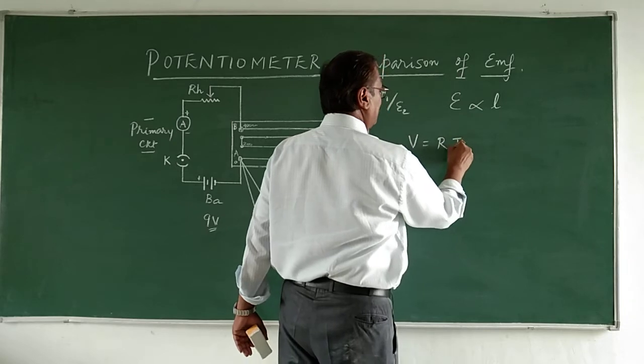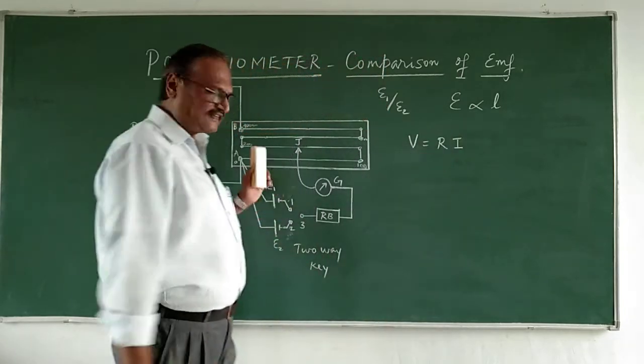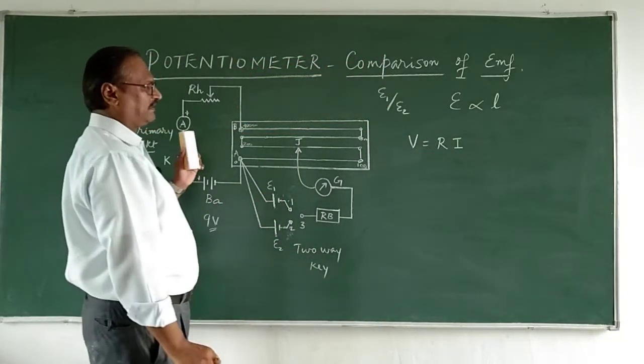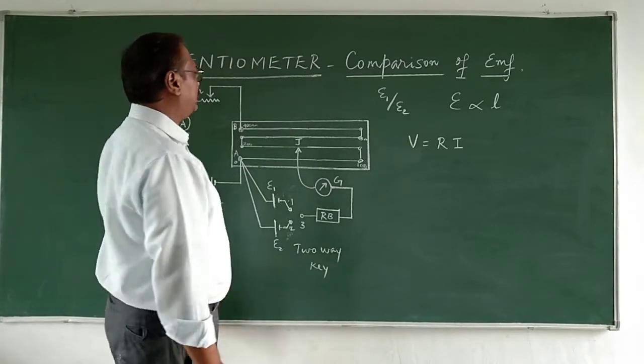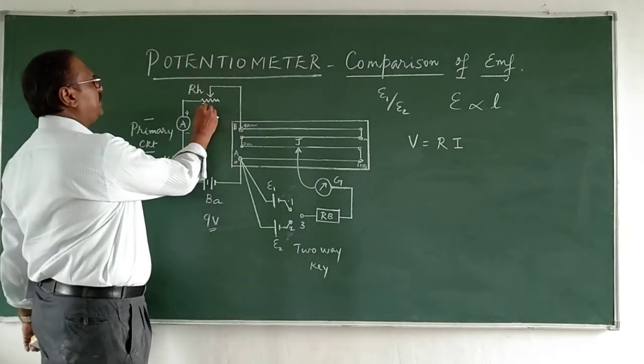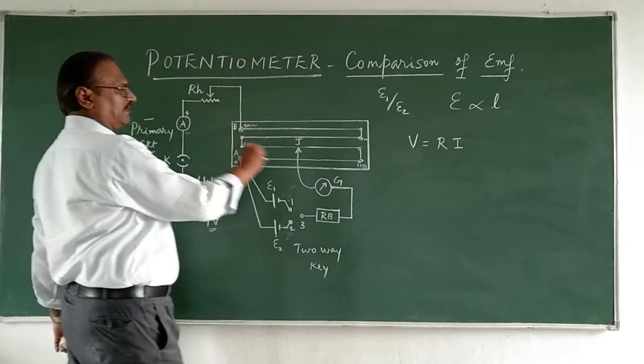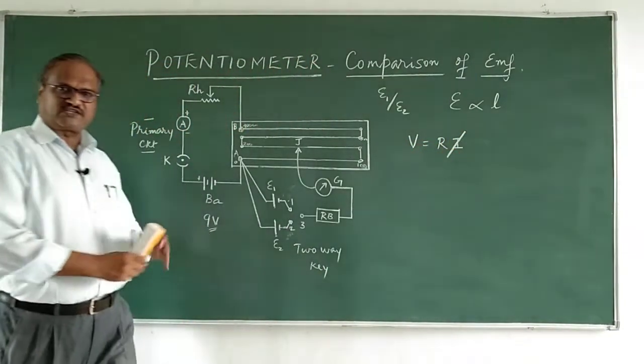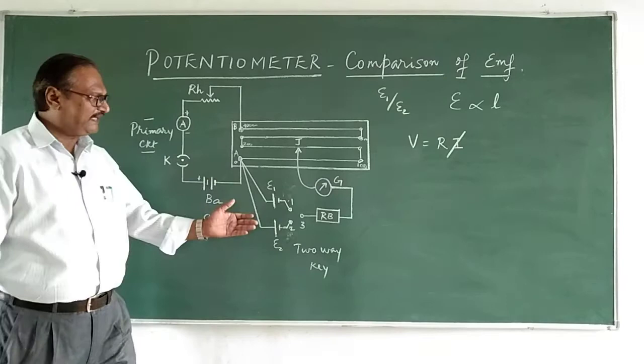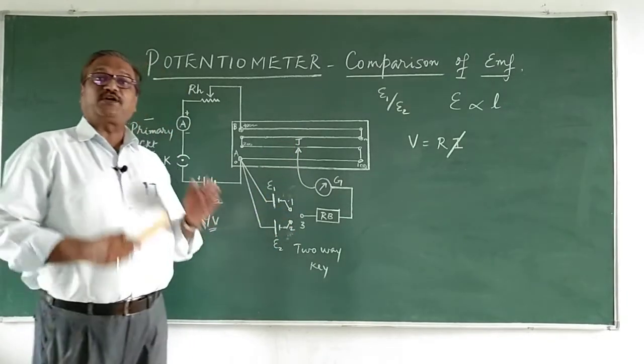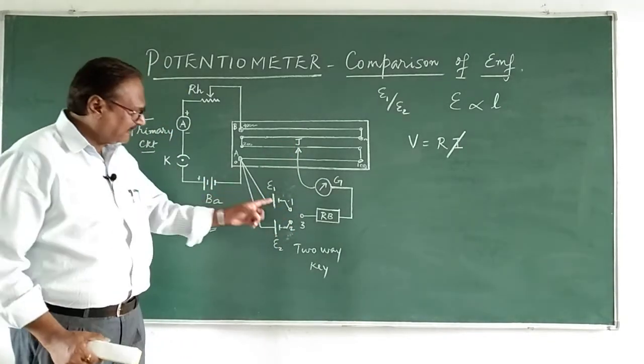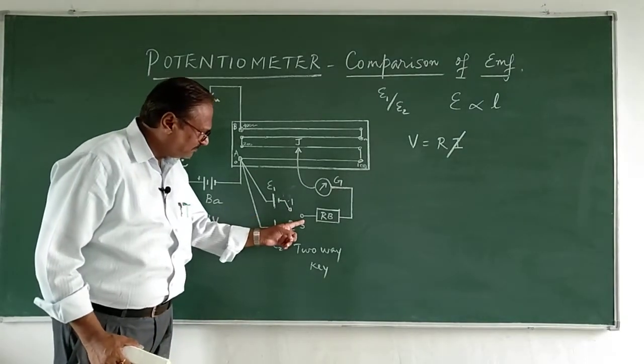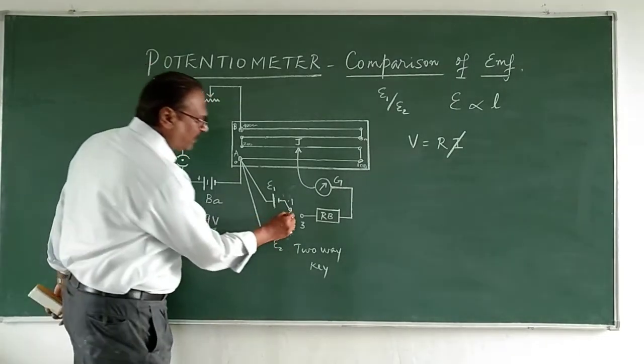In this particular thing which we are doing in the potentiometer, we keep a constant current. We are going to make the current a constant. That means for one ampere current, I take two sets of values. I am going to find the balancing length.